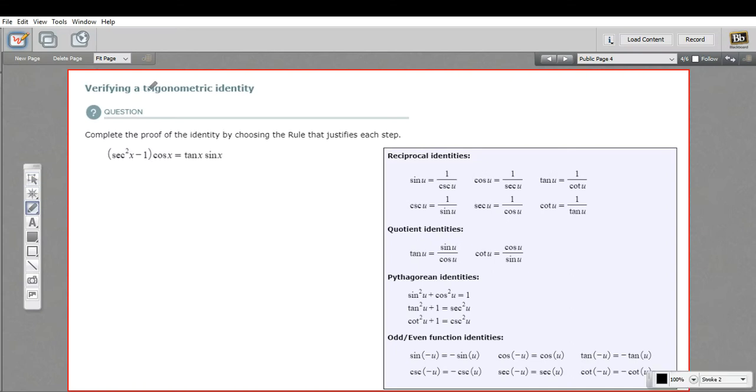In these problems, we're being asked to verify a trigonometric identity. We have this statement where secant squared of x minus 1 times the cosine of x equals tangent of x times the sine of x. This is true, a real true statement, and we're supposed to show that it's true by step-by-step converting one side until it looks like the other.